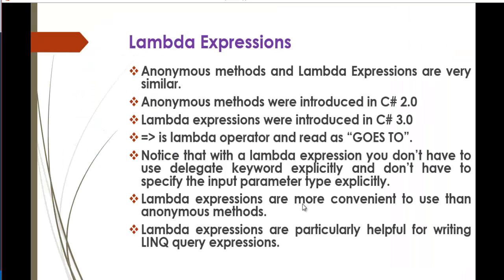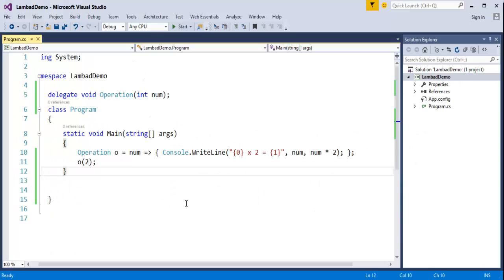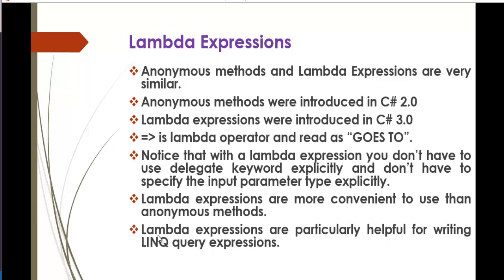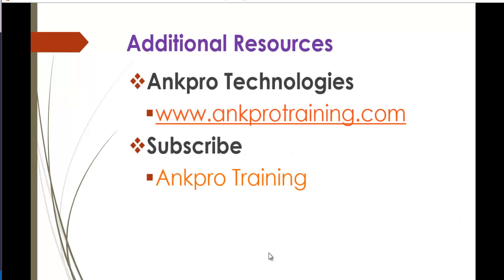Lambda expressions are more convenient to use than anonymous methods. In the previous session we saw how anonymous methods reduced the workload of a delegate, and similarly, lambda expressions also reduce the workload of a delegate as well as being more efficient than anonymous methods. Lambda expressions are particularly helpful for writing LINQ query expressions. To understand LINQ, we'll wait for the coming sessions, where we'll see how lambda expressions are helpful in writing LINQ query expressions. Thank you for listening, have a great day, please subscribe to Angpro Training.